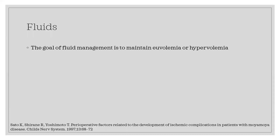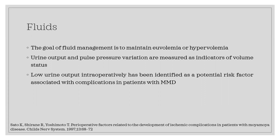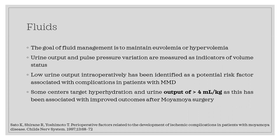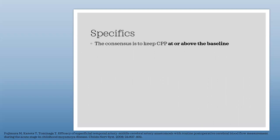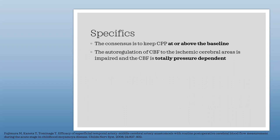Regarding fluids, the goal is to keep patients euvolemic or even mildly hypervolemic, as some authors advise. Maintaining good urinary output is important, as low urinary output is associated with complications after surgery — some centers aim for more than 4 cc per kg per hour. Keeping CPP at or above baseline is the consensus. Because autoregulation is disrupted in ischemic areas, CPP will be directly proportional to perfusion pressure, so maintaining it at or above baseline is recommended.